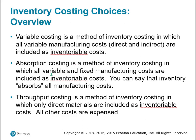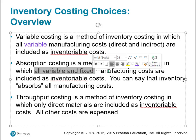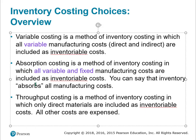There are three inventory costing choices. First, variable costing — a method of inventory costing in which only variable direct and indirect costs are included as inventoriable costs. If we attach cost to inventory, it ends up on the balance sheet. Absorption costing is a method in which all variable and fixed manufacturing costs are included as inventoriable costs — you can say inventory absorbs all manufacturing costs. Throughput costing is a method in which only direct materials are included as inventoriable costs, and everything else is expensed.